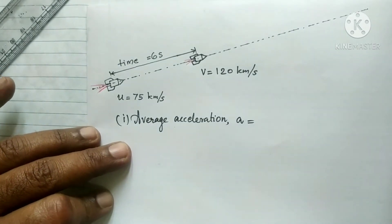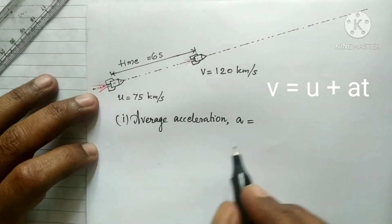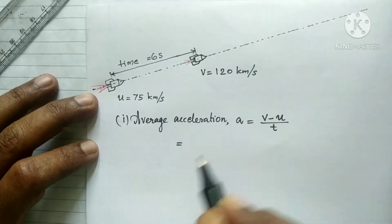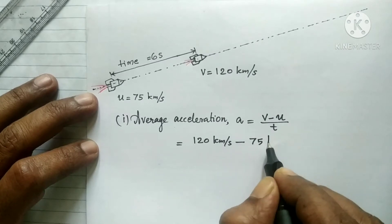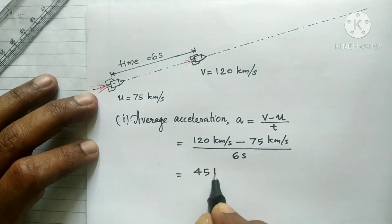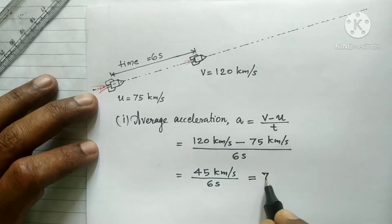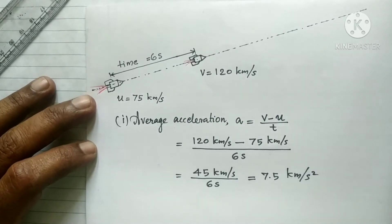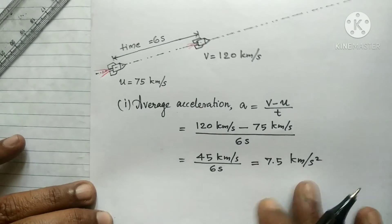We can find the average acceleration from the first equation of motion: v = u + at. Rearranging, acceleration a = (v - u) / t. Substituting the values: (120 km/s - 75 km/s) / 6 seconds = 45 km/s divided by 6 seconds = 7.5 kilometers per second squared. So the acceleration is 7.5 km/s².